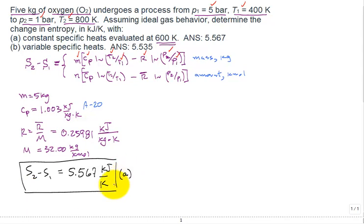What about accounting for variable specific heats? With variable specific heats, we use the table A23, whereas for the constant specific heats, we use table A20 in our textbook. What is the basic equation? It's just like this equation here.